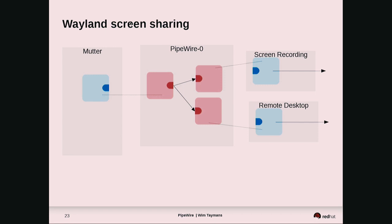Another thing currently being done is Wayland screen sharing. This is an application of one application providing a stream that is then consumed by other applications. For example, Mutter is the compositor — it provides a stream to PipeWire. Then clients join the graph and take the stream to do some processing, like screen recording or remote desktop.